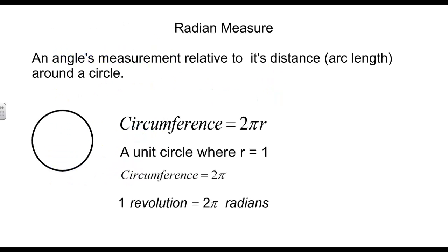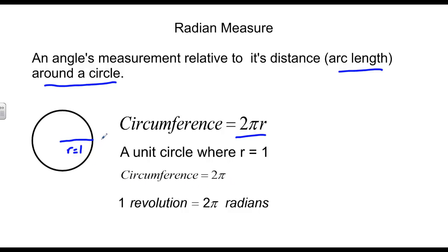Next, we're going to talk about a measurement of an angle that is not in degrees — something called radian measure. Radians are basically an angle's measurement relative to the distance or arc length around a circle. We know that going all the way around the circle is called a circumference, equivalent to 2πr. If we have a circle whose radius is just 1, otherwise known as a unit circle, the circumference would be 2π times 1, which is 2π. Thus, 1 revolution around a circle is equivalent to 2π radians.